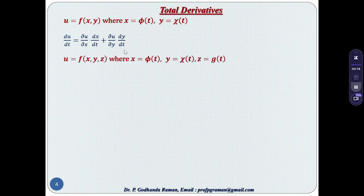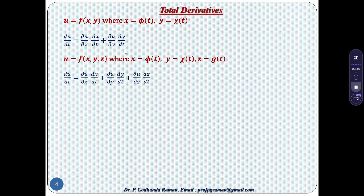Next, for u equals f(x, y, z), where u is a function of three variables and x equals φ(t), y equals ψ(t), z equals g(t), all depending on one variable t, du/dt equals ∂u/∂x · dx/dt plus ∂u/∂y · dy/dt plus ∂u/∂z · dz/dt.